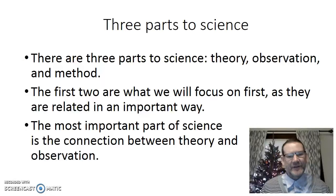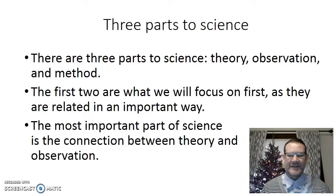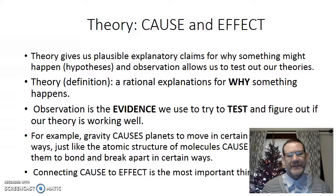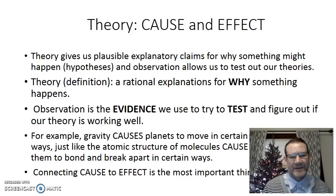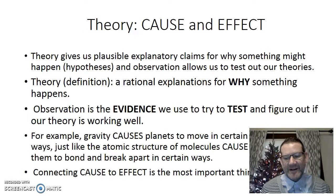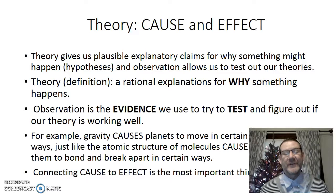So let's talk about the parts of science. There are three parts: theory, observation, and method. I'll spend most of my time on theory and observation. A theory is a rational explanation for why something happens. There are lots of different possible rational explanations; being rational doesn't automatically make you right, it just makes it plausible. Observation is how we test our theories. We have multiple competing theories, and observation allows us to say this theory does better at this and that theory does better at the other.